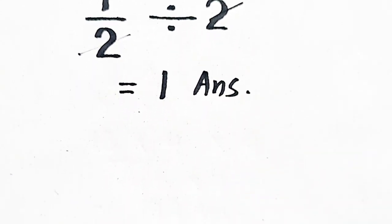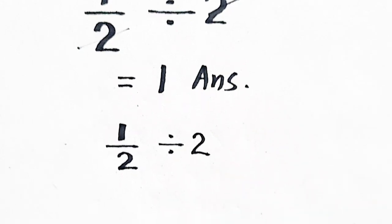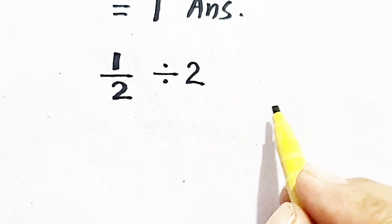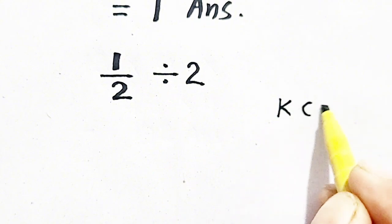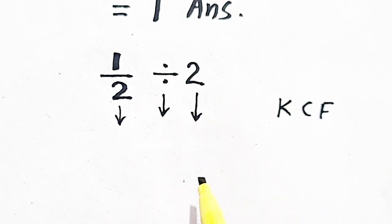So we have to solve it again by applying some rules. 1 by 2 divided by 2 can be solved by applying KCF rule. What is KCF? It is K, it is C, it is F.